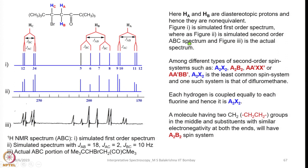Among different types of second order spin systems we come across A2X2, A2B2, AA'XX', and AA'BB'. Among all of these, A2X2 is the least common spin system; one such example is difluoromethane, where each hydrogen is coupled equally to each fluorine, making it A2X2. One should remember that if we have a molecule with two methylene groups adjacent to each other in the middle and substituents with similar electronegativity at both ends, that would show an A2B2 spin system.